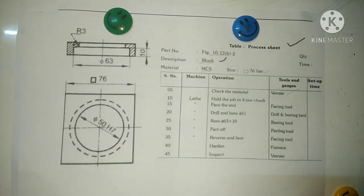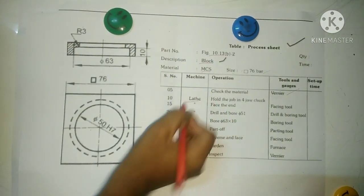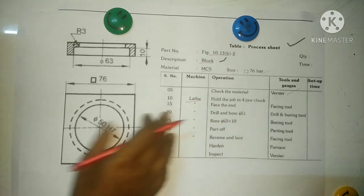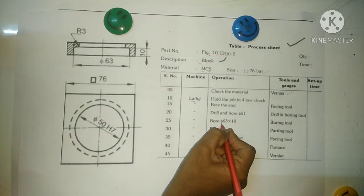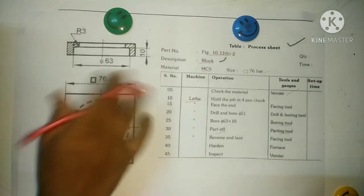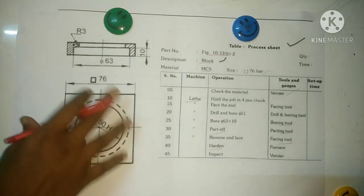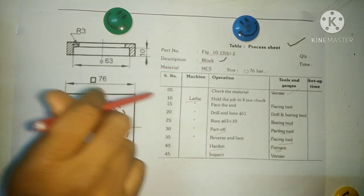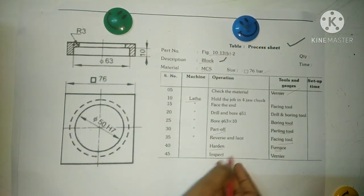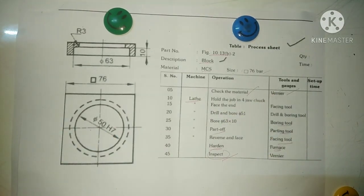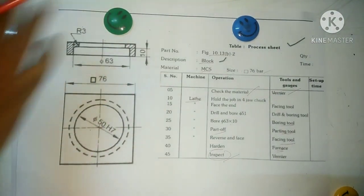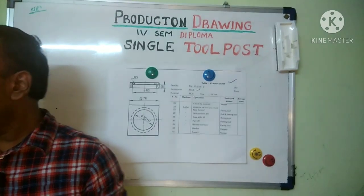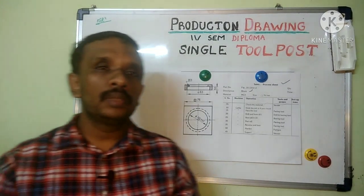The first operation is facing, performed on a lathe machine using a facing tool. Then drill and bore to achieve the 63mm inner diameter using a boring tool. After boring, facing and parting operations are done. Once all machining is complete, the part goes for heat treatment — hardening — which is very important so the block can withstand the cutting forces. Finally, inspect at the end. This completes the process sheet and all the details of the single tool post. In the next session, we will go on to the next assembly drawing. Bye!